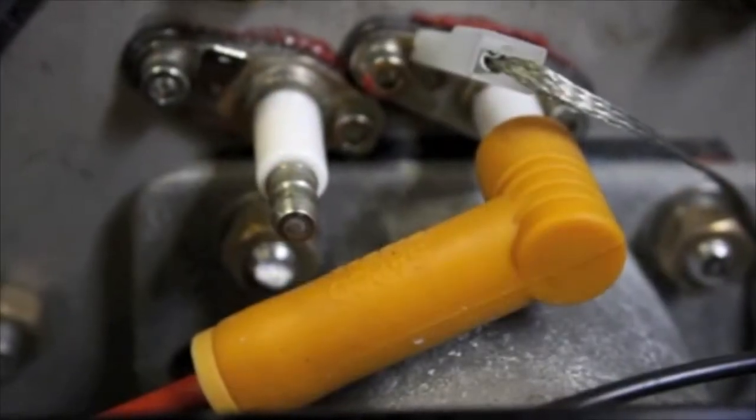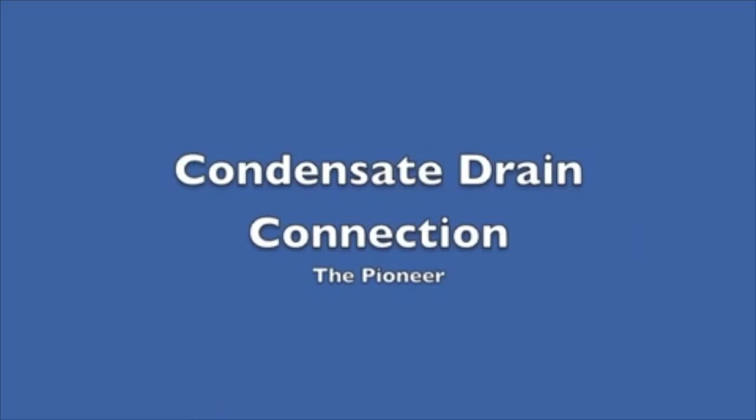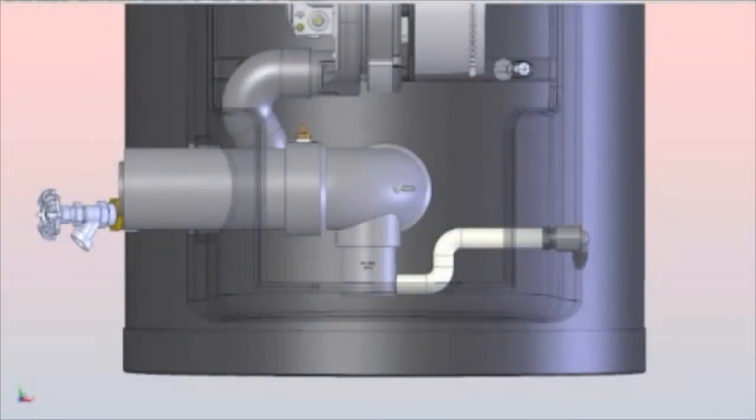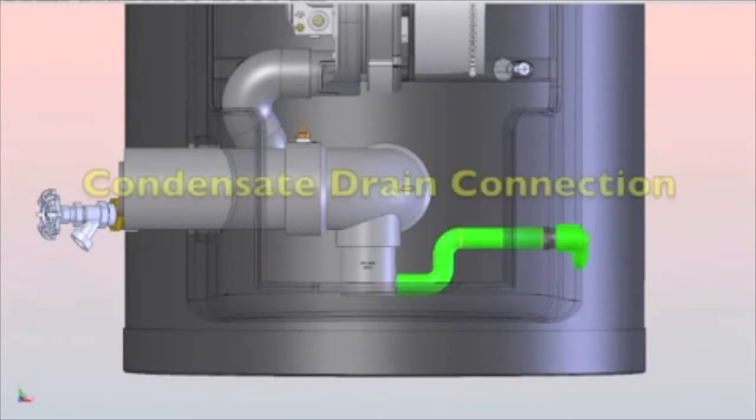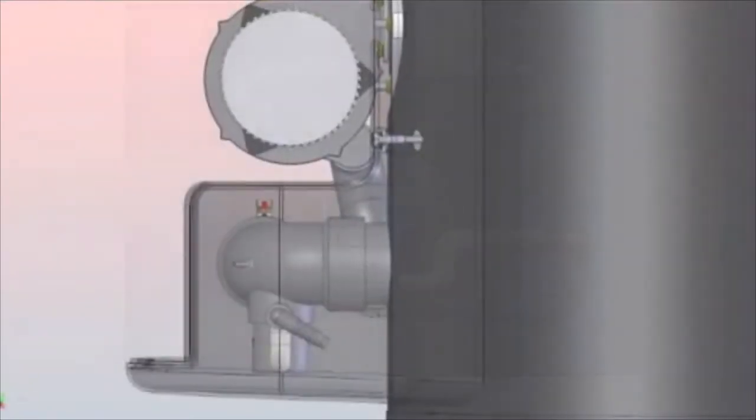Condensate drain connection: the Pioneer is a condensing high efficiency appliance and therefore has a condensate removal system. Condensate is water vapor derived from combustion products, similar to that of an automobile when it is initially started.